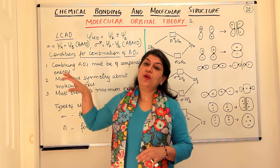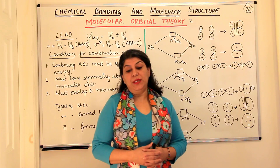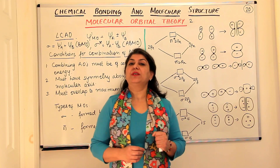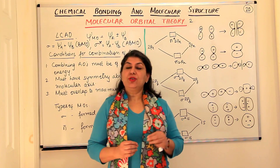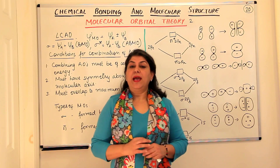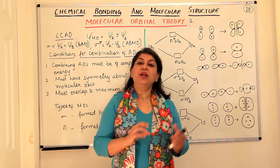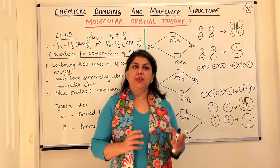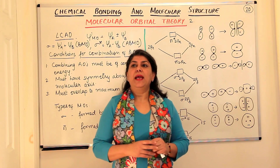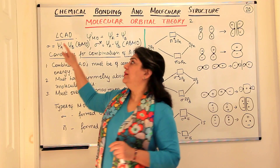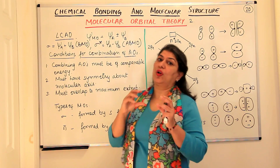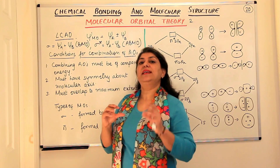But before I tell you more about the MOT, let me remind you that when we did the chapter atomic structure, I told you about the Schrödinger wave equation. The Schrödinger wave equation is based on the assumption that electrons have wave nature, and the wave function—that is, psi—is solved in the equation.